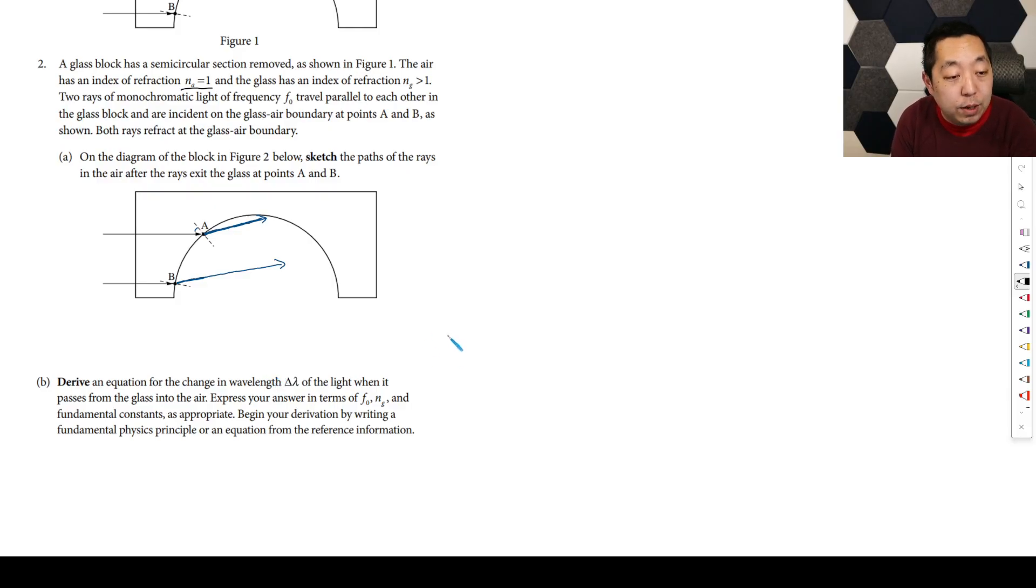Begin your derivation by writing a fundamental physics principle or equation from the reference information. So basically we are going to start with some kind of equation or principle. Now if we're talking about the frequency and we want the change in the wavelength here, we know that light, the speed of light, is equal to lambda times the frequency. That's one thing we know. The other thing we also know is Snell's Law, or the index of refraction affects the speed of light. Remember, in glass it goes slower than the speed of light.